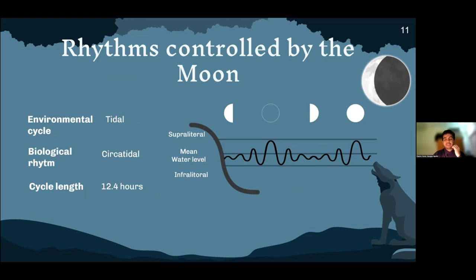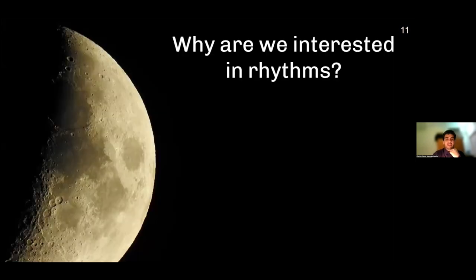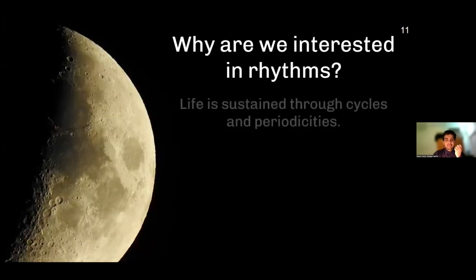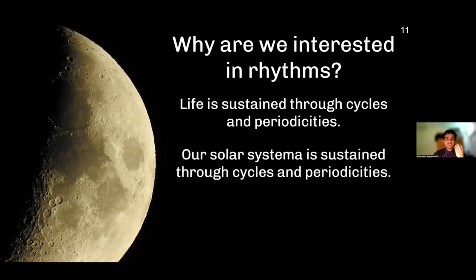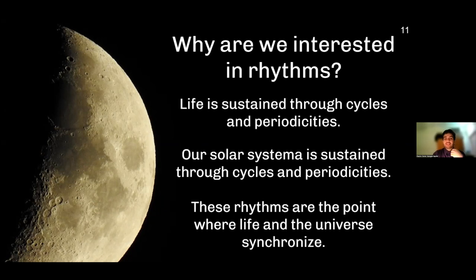These cycles often depend on internal biological clocks, whose exact methods of functioning have not yet been explained with certainty. You might ask: why are we interested in these rhythms? Life is sustained through cycles and periodicities. Our solar system is sustained through cycles and periodicities. So these rhythms are the point where life and the universe synchronize.